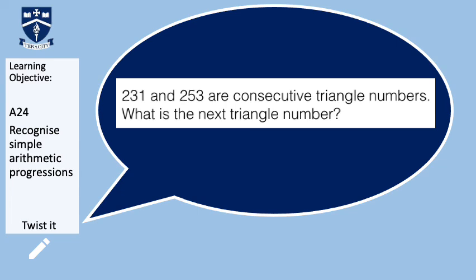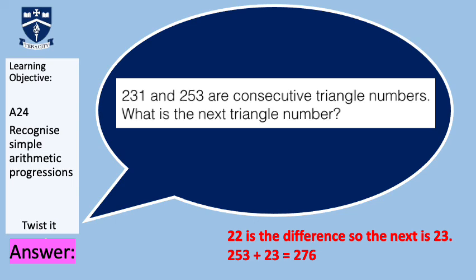We have a Twisted-style question. It says 231 and 253 are consecutive triangular numbers — what is the next number? The difference between 231 and 253 is 22. We know in a triangular number sequence every difference is one more than the last. So the next difference is 23. Therefore: 253 + 23 = 276. The answer is 276.